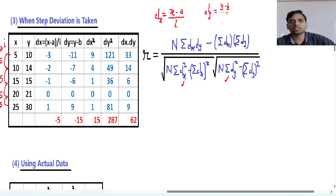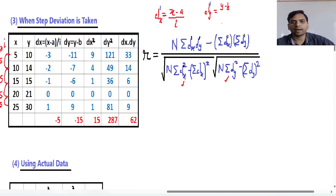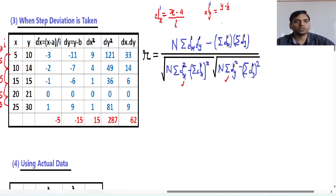We will use only y minus b for this step deviation method. Step deviations are denoted not by d but by d-dash. So in this formula of assumed mean, we will replace all these d by d-dash. This is now the formula for the step deviation method. As we calculated dx in the previous formula, now we will calculate d-dash. We will calculate dy-dash, dx-dash, dy-dash squared, and dx-dash times dy-dash.